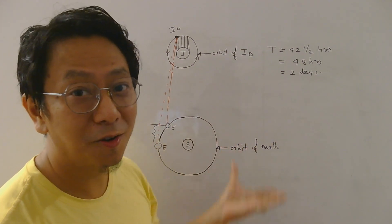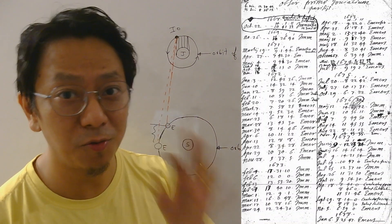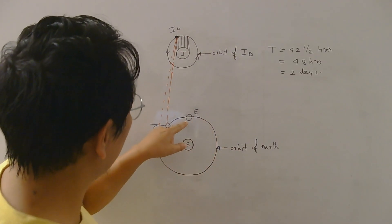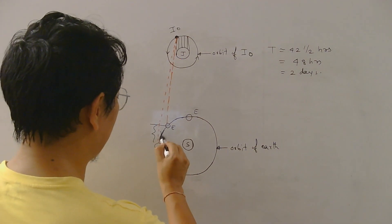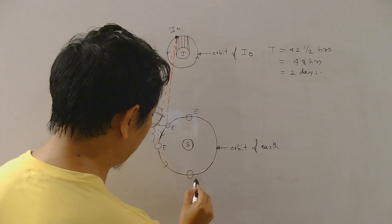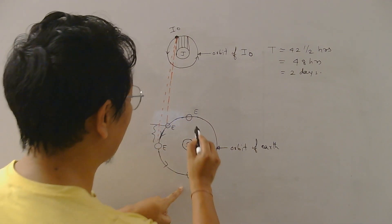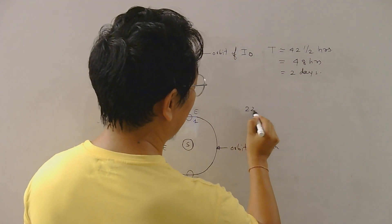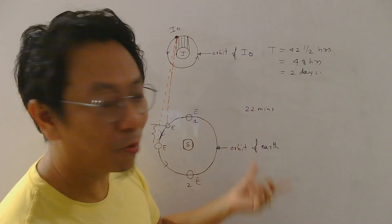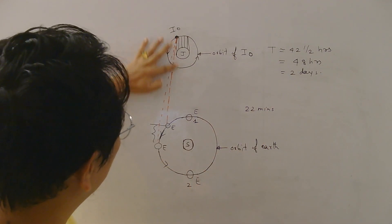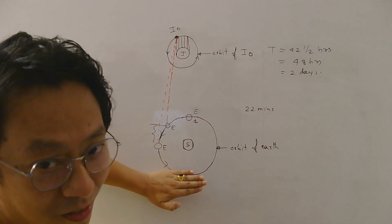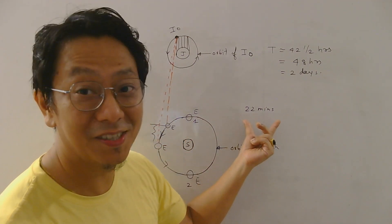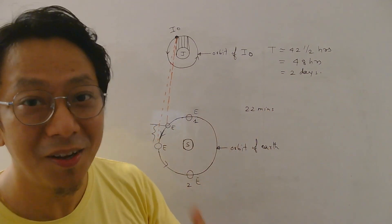Now Romer did this kind of measurements of the moon Io for 5 to 6 years. And he found that by the time earth goes from the position when it is nearest to Jupiter to the position when it is farthest from Jupiter, from here to here, he found that the delay in the moon rise is now 22 minutes. Now why this delay happens? Because light from Io to reach here and then to reach here has to travel this much extra distance. And to travel that extra distance it will take some extra time, and that is the delay which Romer mentioned.